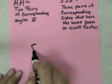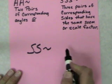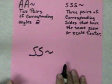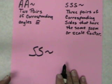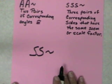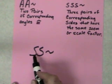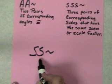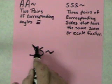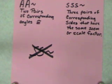The first option we looked at was whether we could have side-side similarity. We discovered that we could make multiple different rectangles that would not be similar if we only had two pairs of sides with the same scale factor. So we decided that there was no such thing as side-side similarity, that we needed more information.